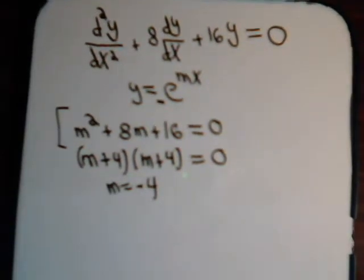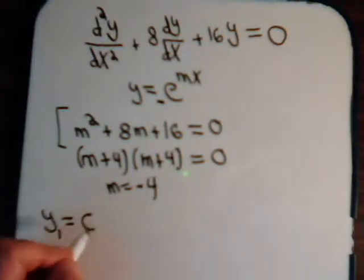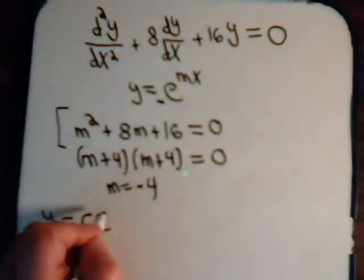So the procedure is very straightforward. What you saw us do in the previous videos. y1 equals some constant. e to the... m is minus 4.